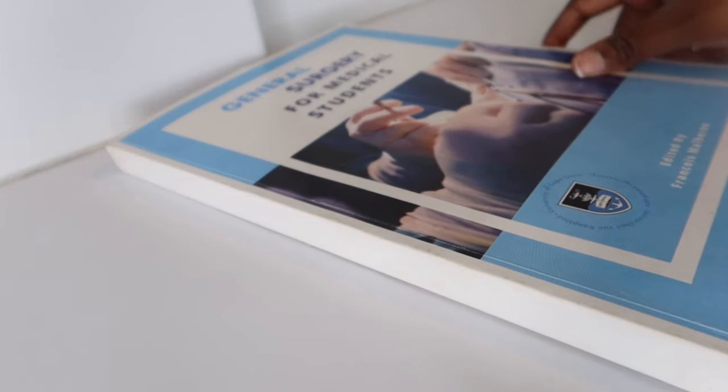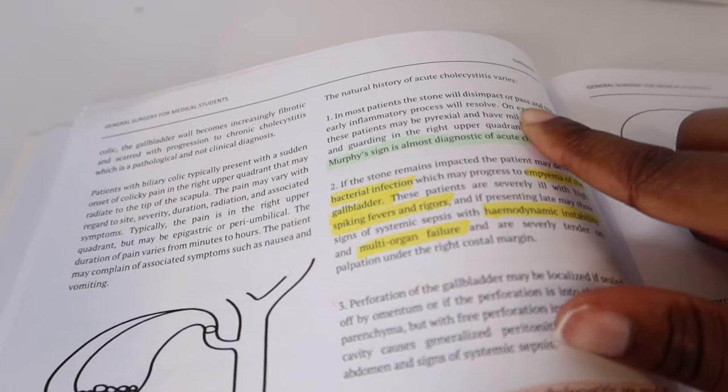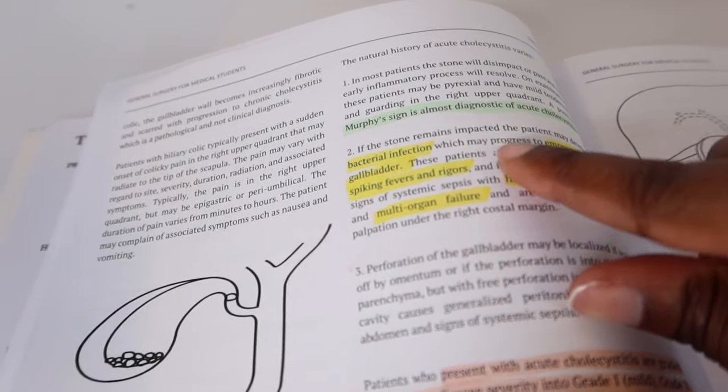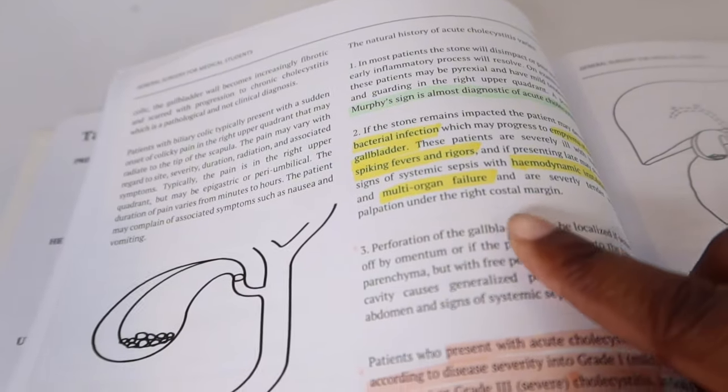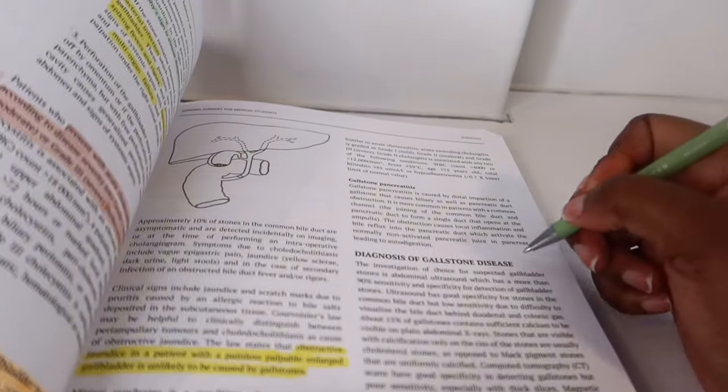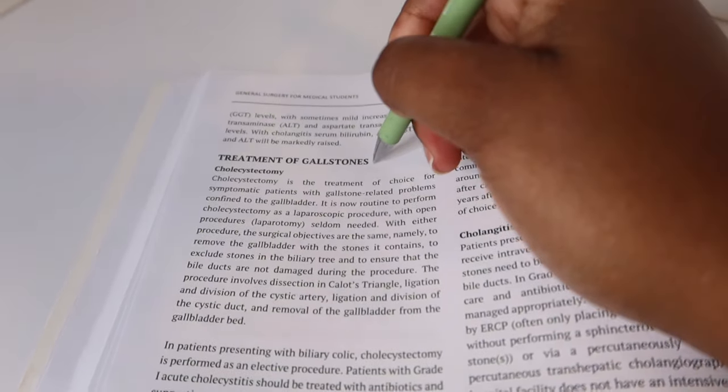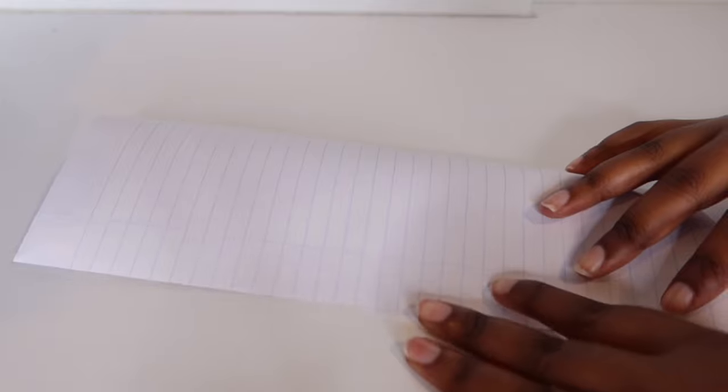So take your textbook and go to the topic you would like to make notes for. First, you're going to read the topic and read to understand. Make sure that you highlight each and every key points. The next step is to mark all the subtopics that are important for that chapter. Now take a clean sheet of paper, fold it into half to make an imaginary line. This is to divide your page into two.